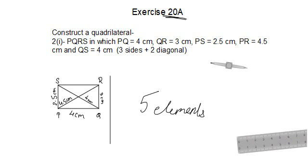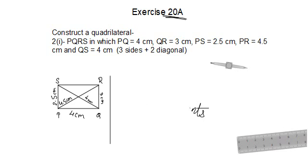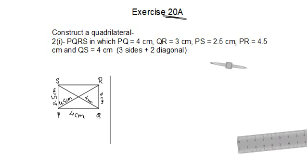This time we are doing three sides and two diagonals. Till the previous question we had learned how to do four sides and one diagonal. This time the number of sides has decreased by one and the number of diagonals has increased by one.